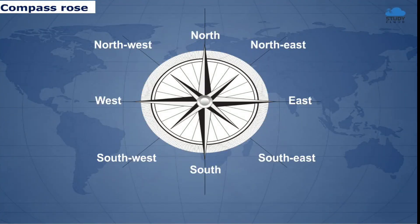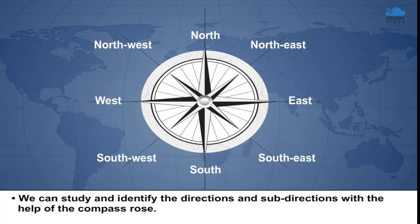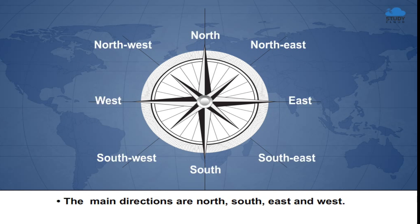Compass Rose. We can study and identify the directions and sub-directions with the help of the compass rose. The main directions are North, South, East, and West.